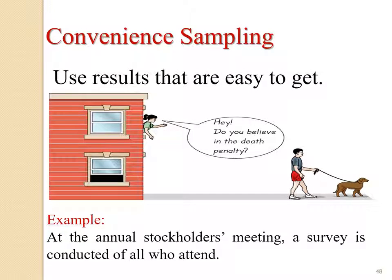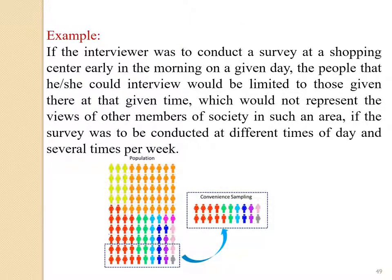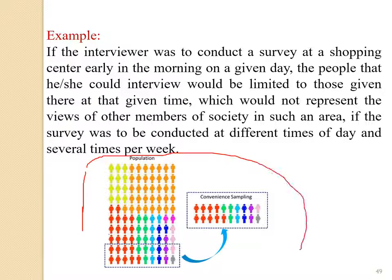Convenience sampling: you particularly choose some convenient or particular groups. For example, a survey conducted at a stockholders' meeting. If an interviewer contacts a survey at a shopping center on a weekday morning, the people interviewed would be limited to those available at that given chance, which would not represent the views of all members of society. In this case, you select a particular convenient group — that is called convenience sampling.